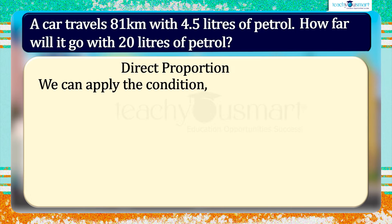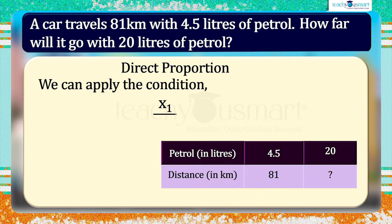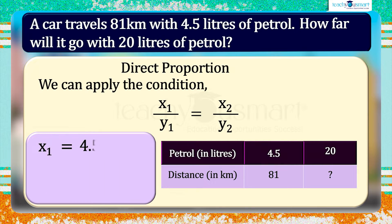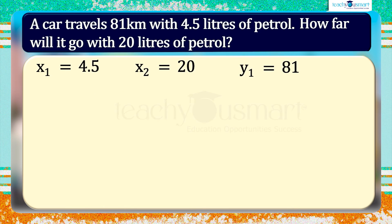So we can apply the condition: x1 by y1 equals x2 by y2. Here, x1 equals 4.5, x2 equals 20, and y1 equals 81. That is, 4.5 by 81 equals 20 by y2.